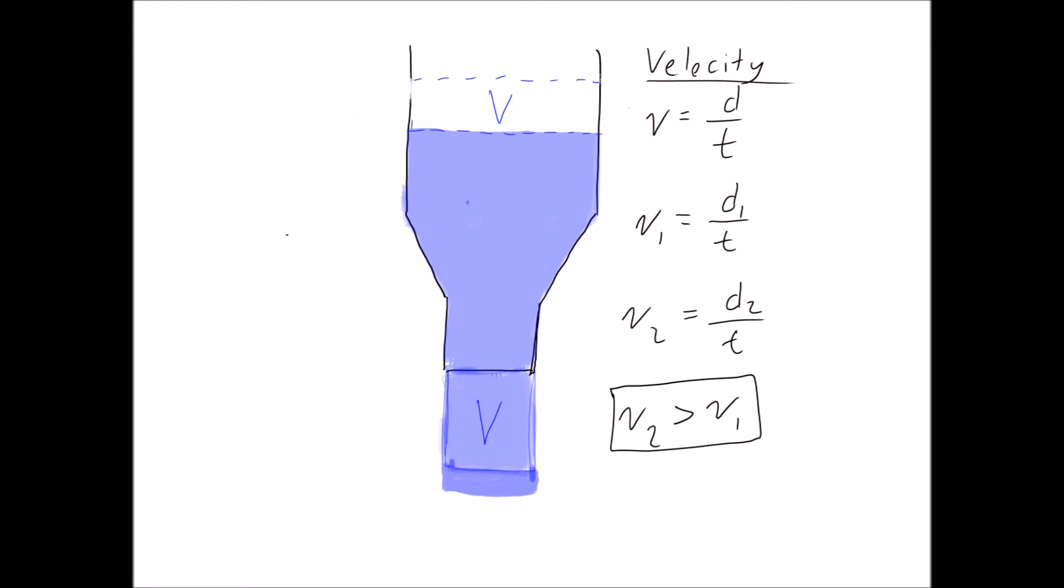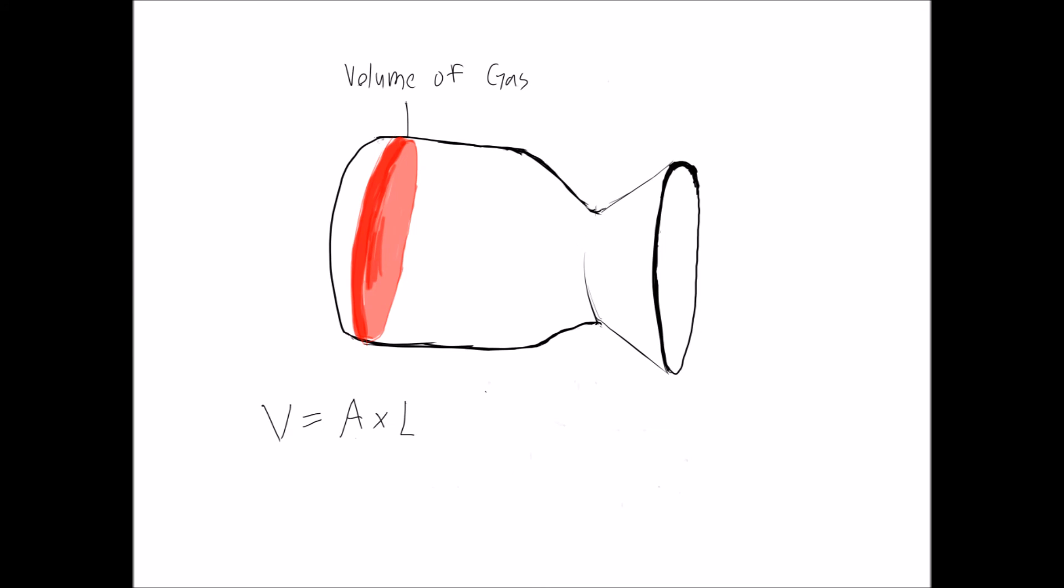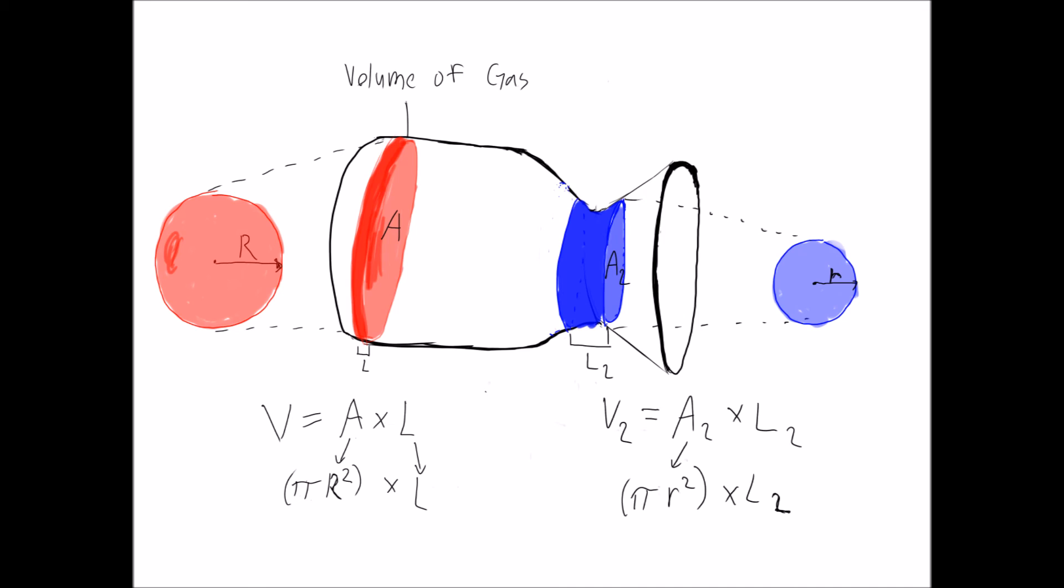This concept applies to our de Laval nozzle. Since the cross-sectional area in the chamber is larger than the cross-sectional area at the throat, the length of the imaginary cylinder at the throat must be greater than the length of the imaginary cylinder in the chamber.